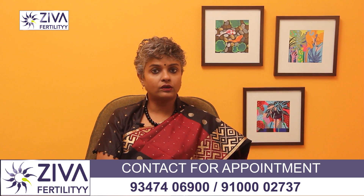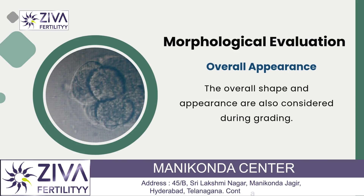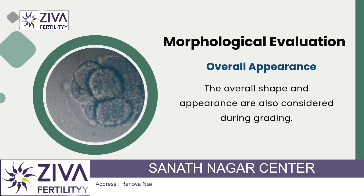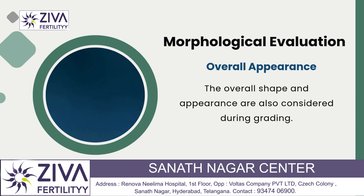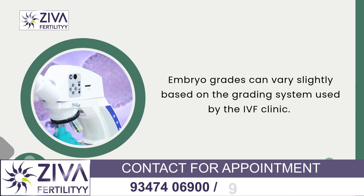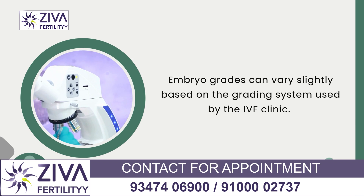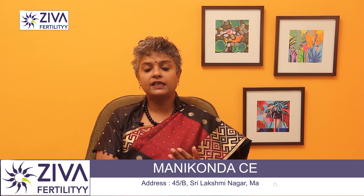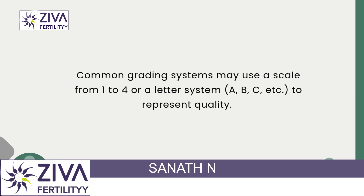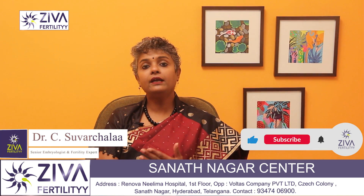The overall appearance is also very important — the shape and appearance are considered during grading to assess how regular or irregular the embryo formation looks. Embryo grading can vary based on the grading systems used by the IVF lab. Commonly, grading systems scale embryos from 1 to 4 or A, B, C, D, etc. Cleavage stage embryos are graded differently from blastocysts, and the higher the grading, the higher the chance of success.